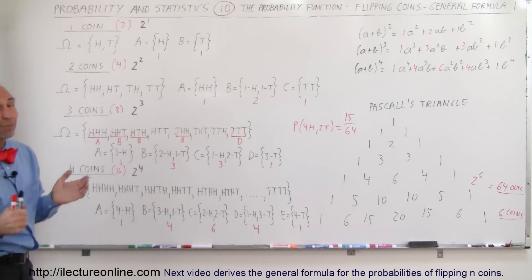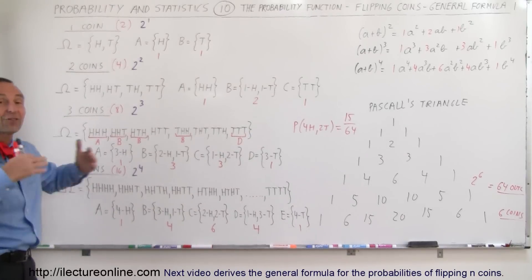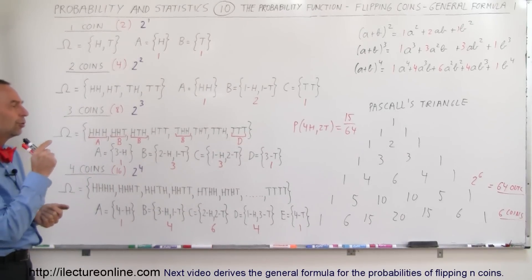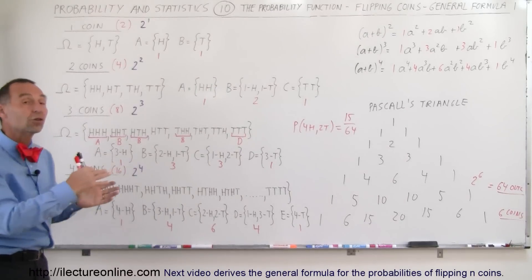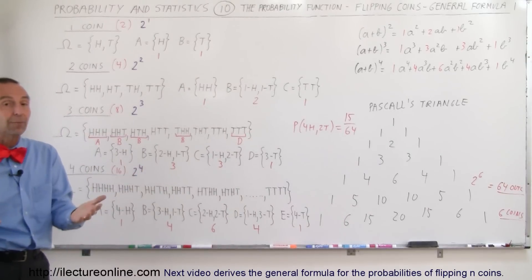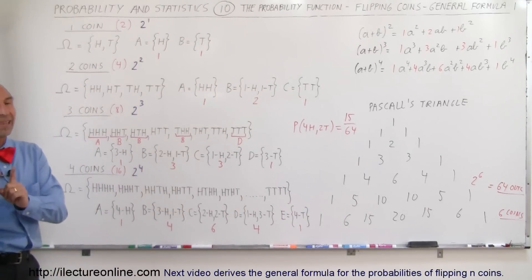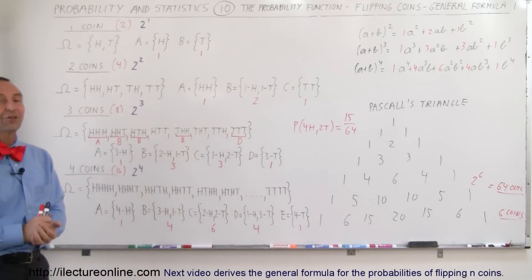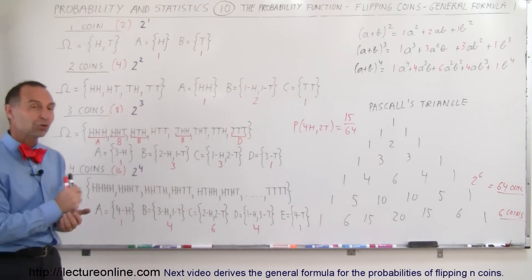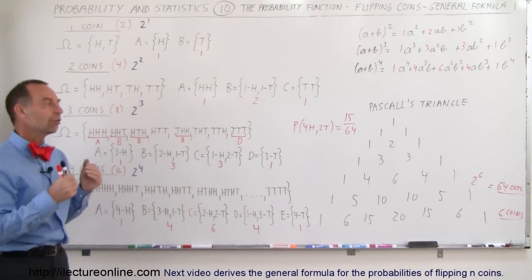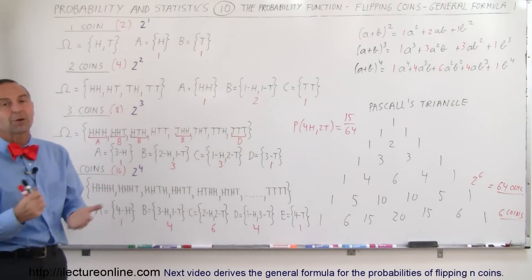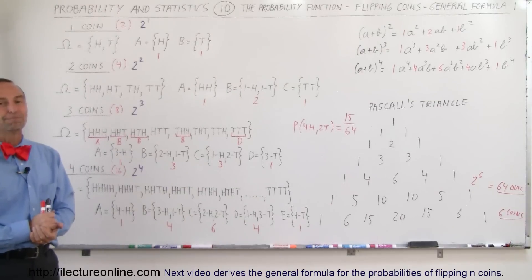That's one interesting way to find the probability of any particular outcome when you flip a certain number of coins. However, this becomes a very laborious method for much greater numbers, so we should be able to come up with a more general equation. That we're going to do in the next video — we'll show you how to find the general equation for the probability of any sort of outcome when flipping coins.